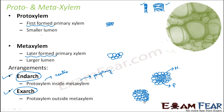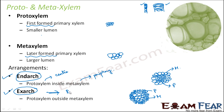In exarch, it is just the opposite — 'ex' means outside — so the proto xylem lies outside the meta xylem. The meta xylem is towards the center and the proto xylem is towards the periphery. The exarch arrangement is what you will see in the root, whereas the endarch arrangement is what you will see in the stem. So these are the two different types of arrangements of proto xylem and meta xylem.